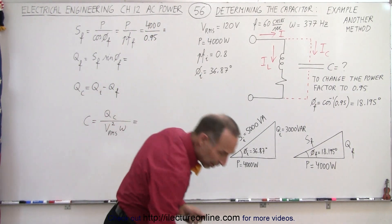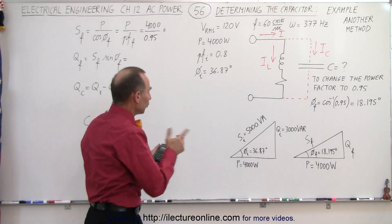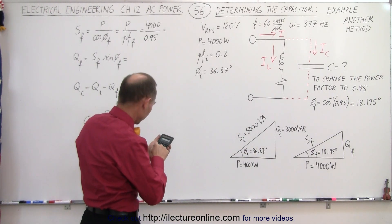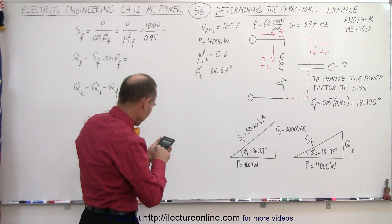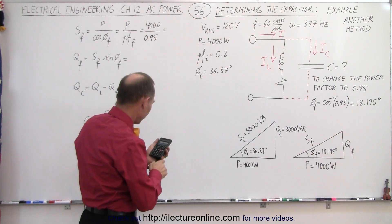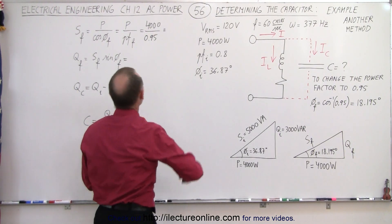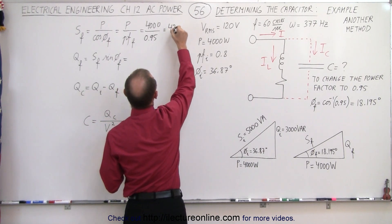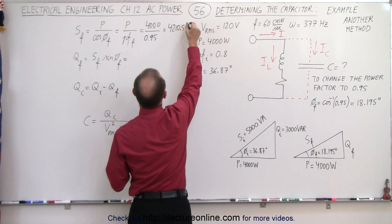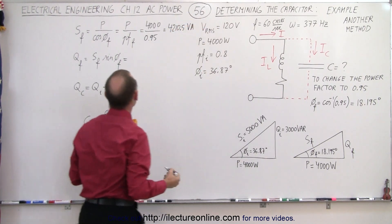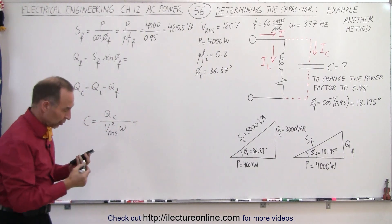Which gives us the new complex power for the new circuit with the capacitor. So 4000 divided by 0.95 gives us 4210.5 VA, volt ampere, for the complex power of the new circuit.